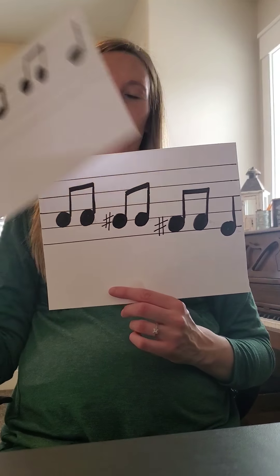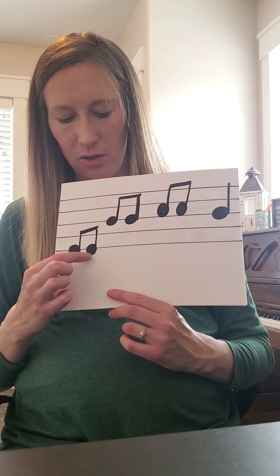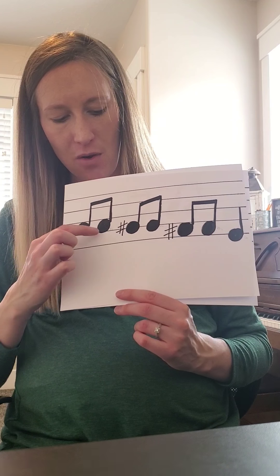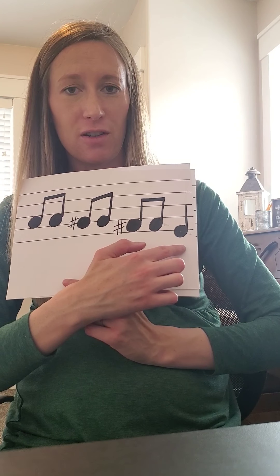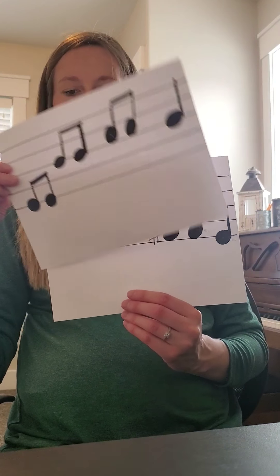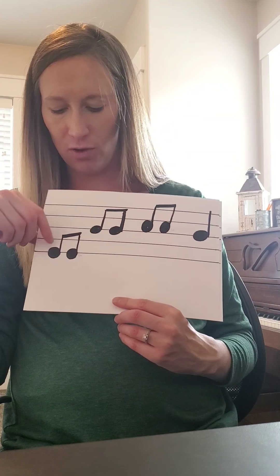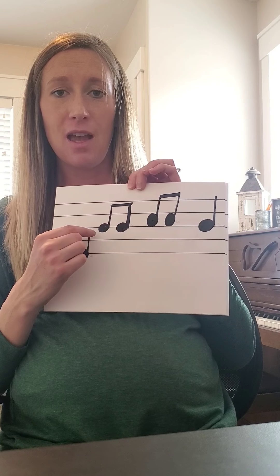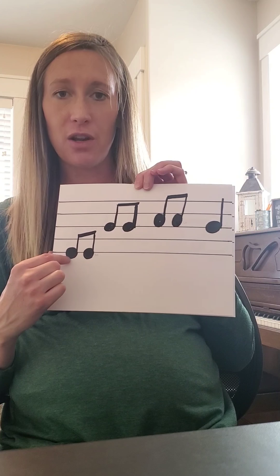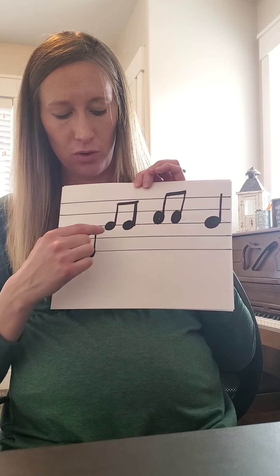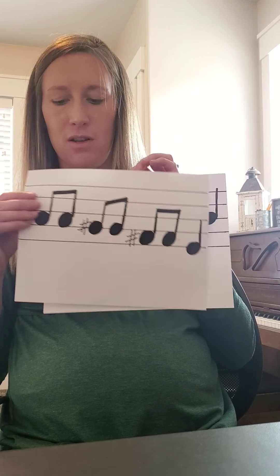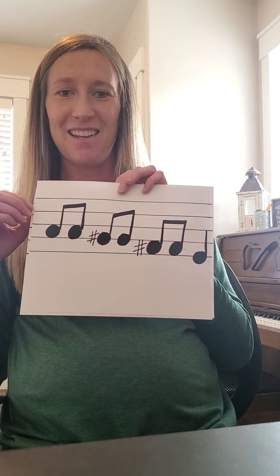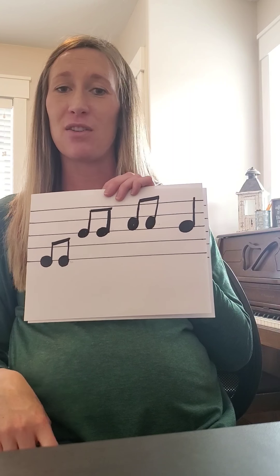Now we can sing those notes. Twinkle, twinkle, little star. How I wonder what you are. Now sing it with me. If you notice, we start down low in our voice on a low note and then follow the pattern — we go up higher if the note's higher. That's how we read the notes. One more time, but this time we're going to say the names of the notes instead: E, E, B, B, C, C, B, A, A, G, G, F, F, E.